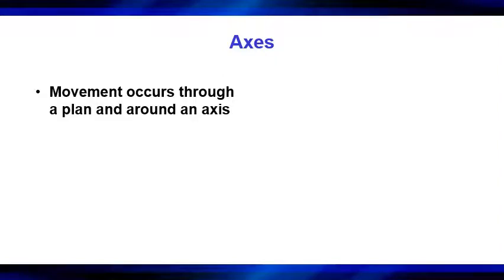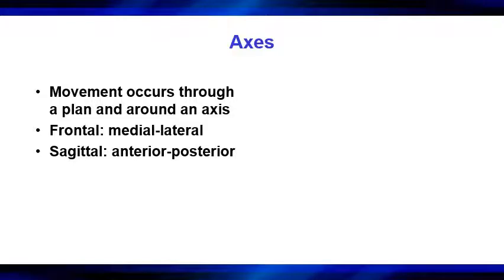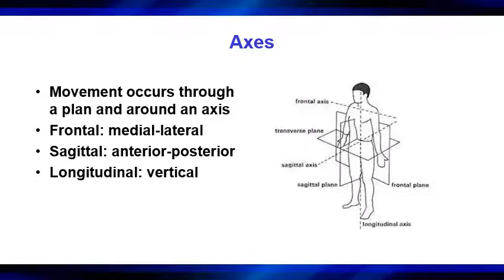Movement occurs through a plane and around an axis. You have the frontal plane or medial-lateral axis, the sagittal plane or anterior-posterior axis, and the longitudinal or vertical axis. I want you to know both names. Your book only uses the terms frontal, sagittal, and longitudinal for the axes, but I'm having you learn both, because in other classes you're likely to encounter the different terminologies.